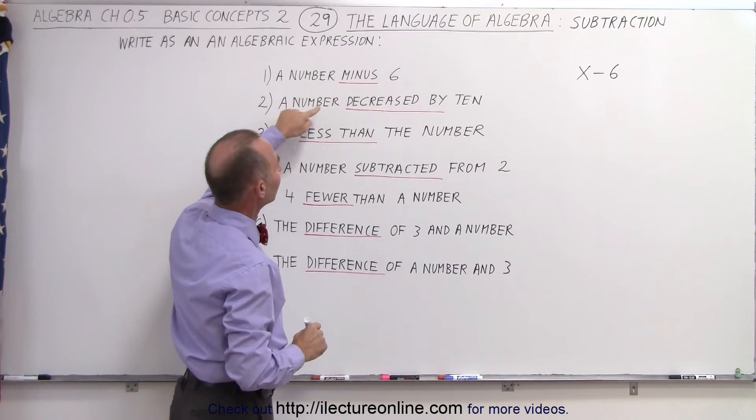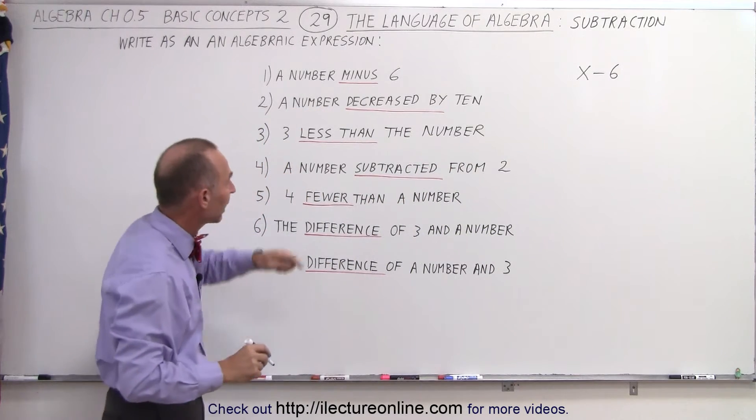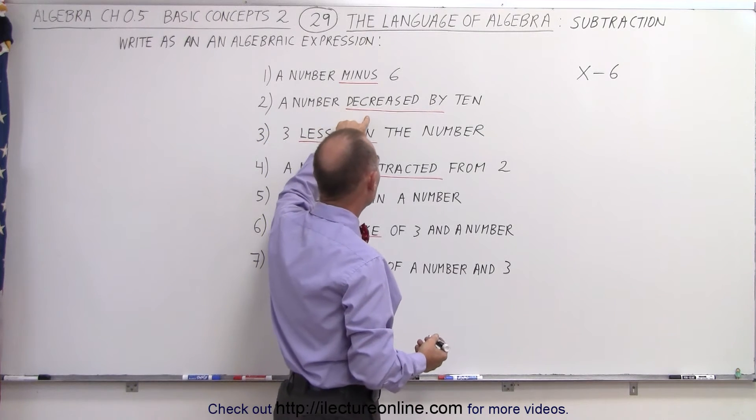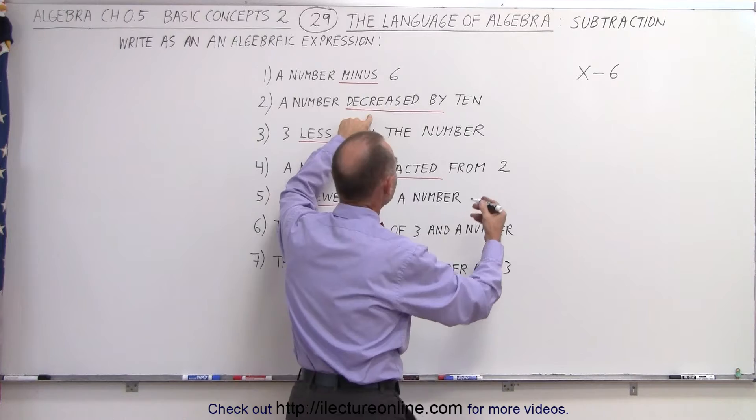The next statement, a number decreased by 10. So again, we take an unknown quantity, let's call it x, and then we're going to decrease it by 10 by subtracting 10 from it. So that would be x minus 10.